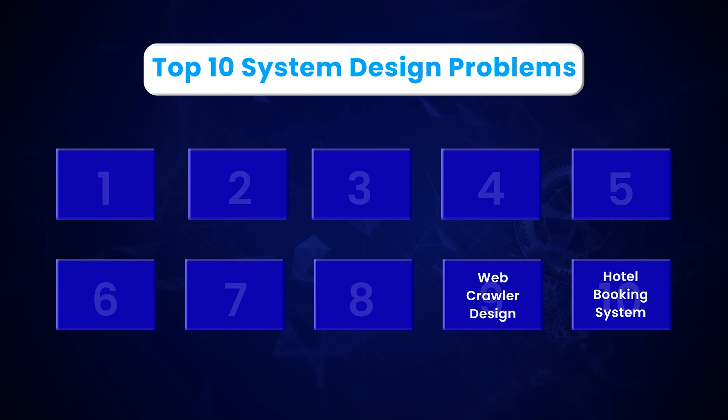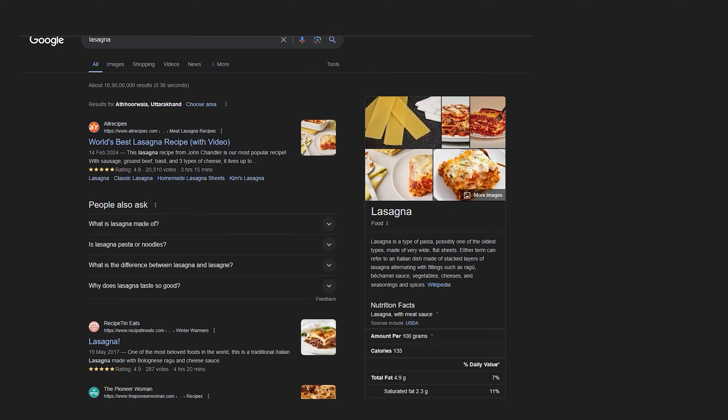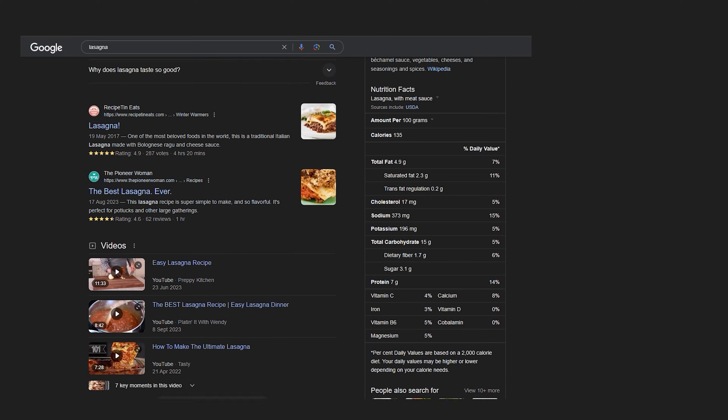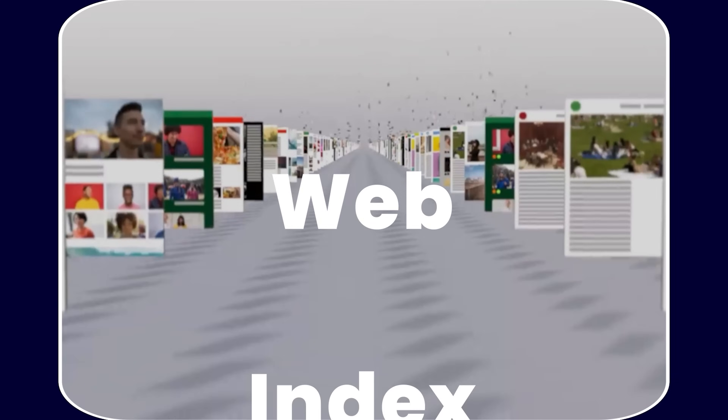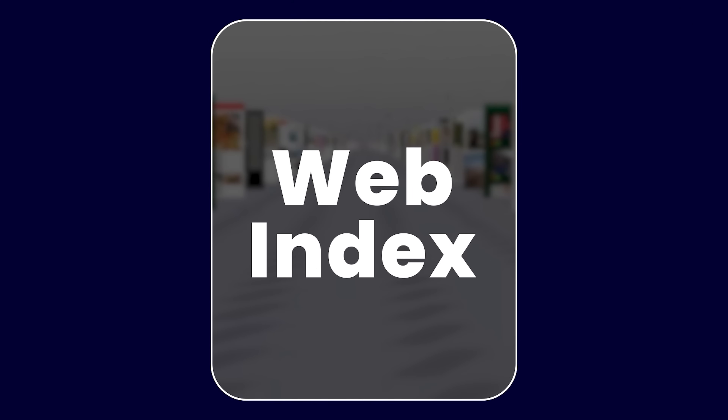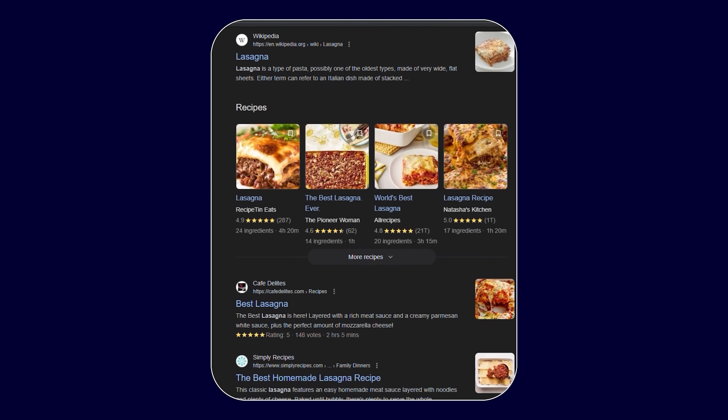At number 9, we have web crawler design. Have you ever wondered how Google is able to get so much information from the internet so fast? Google has a database of all the web pages on the internet — this database is called a web index. The index stores details about the content of each web page, such as keywords, titles, and links. Google uses this index to quickly retrieve results when a user enters a query.